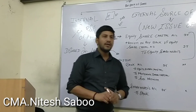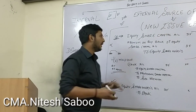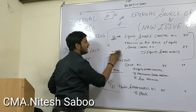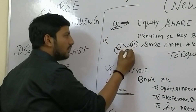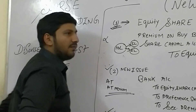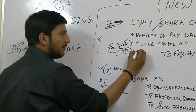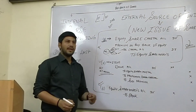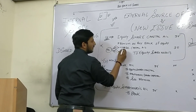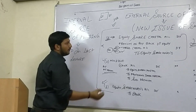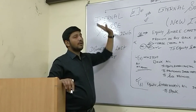A mix method can also be used — some portion will be from internal source of funding and some portion from external source of funding. For example, for a 10 lakh buyback, if 5 lakhs is available as reserves, then the shortage of funds is 5 lakhs. So we can go for a mixed combination: 50% with the internal source of funding and 50% with the external source of funding. The internal source available is CRR (Capital Redemption Reserve). This is all about the buyback of shares.